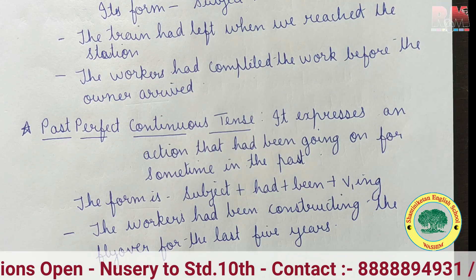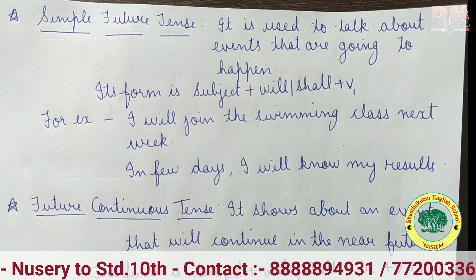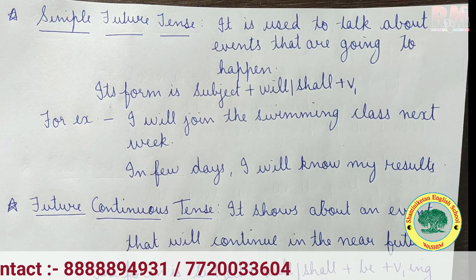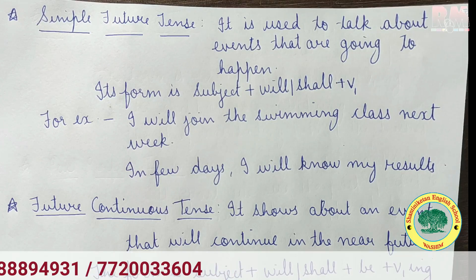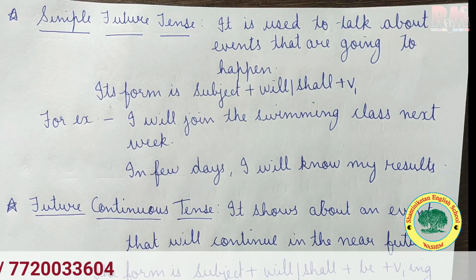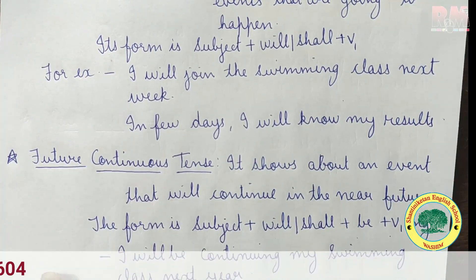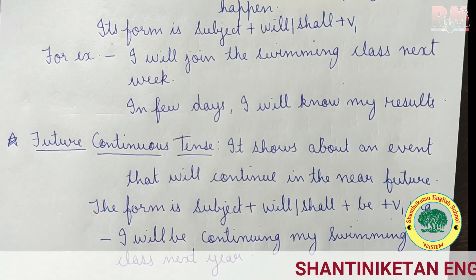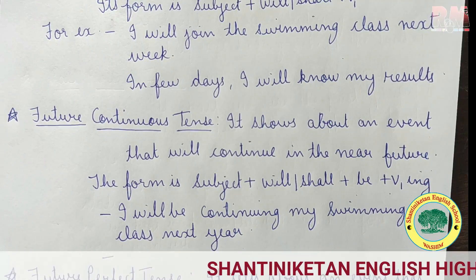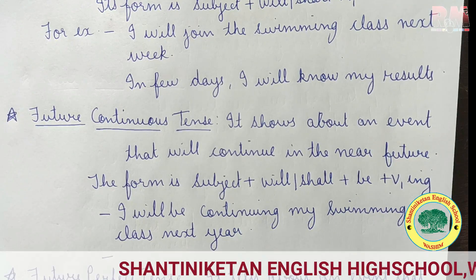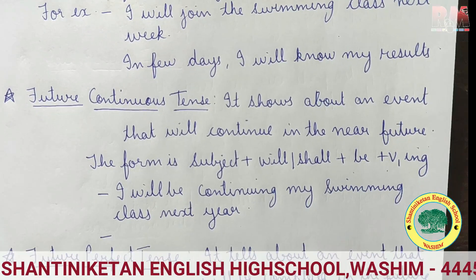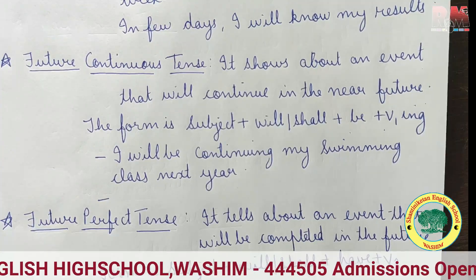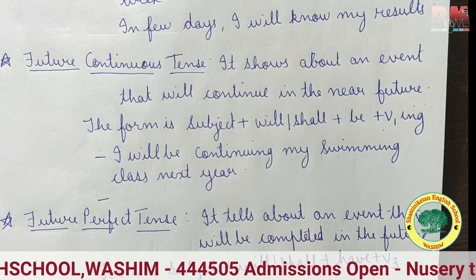Now let's start with future tense. Simple future tense is used to talk about events that are going to happen. Its form is subject plus will/shall plus V1. For example: 'I will join the swimming class next week.' 'In a few days, I will know my result.' Future continuous tense shows an event that will continue in the near future. Its form is subject plus will/shall plus be plus V1+ing.